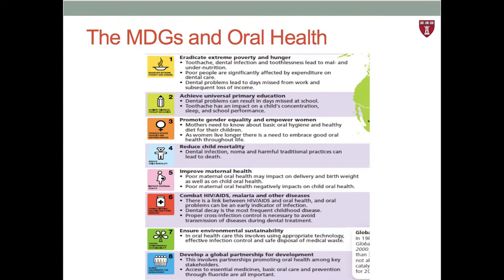Although none of the goals, targets, or indicators specifically addressed the burden of oral diseases, all eight of the MDGs had links to oral health. The MDGs provided valuable opportunities to the global oral health community regarding the importance of identifying common linkages between oral health and the global health and development agenda, even when not explicitly recognized by global leadership. As you can see here from the FDI Oral Health Atlas 2009 version, specific ways that oral health and the MDGs align are highlighted.